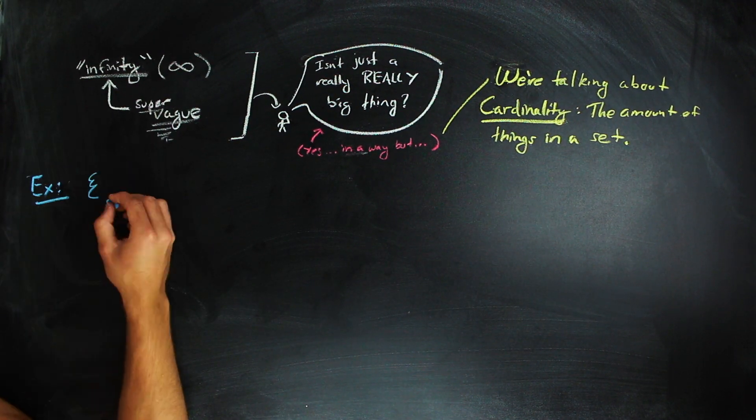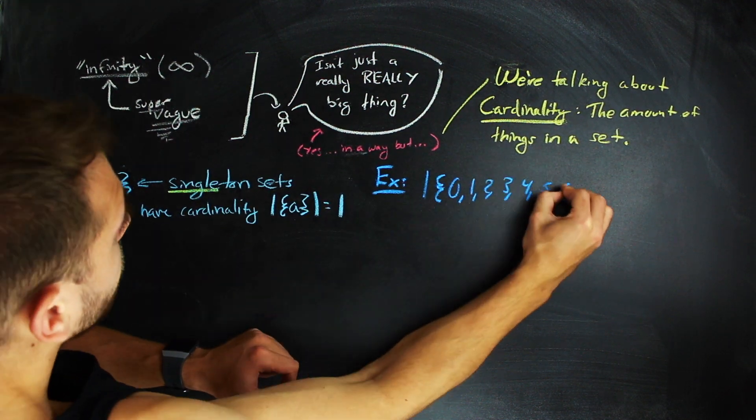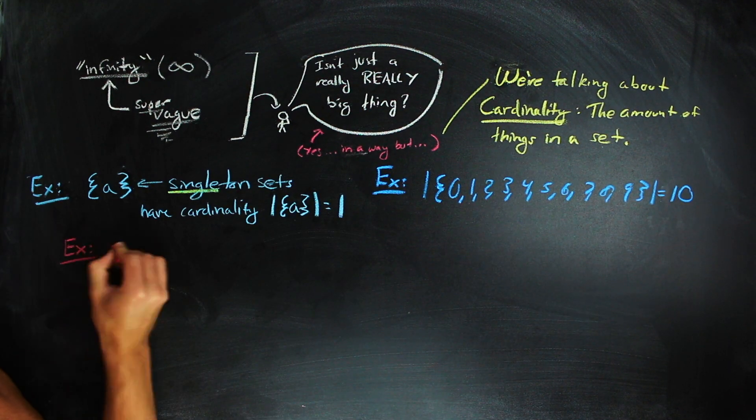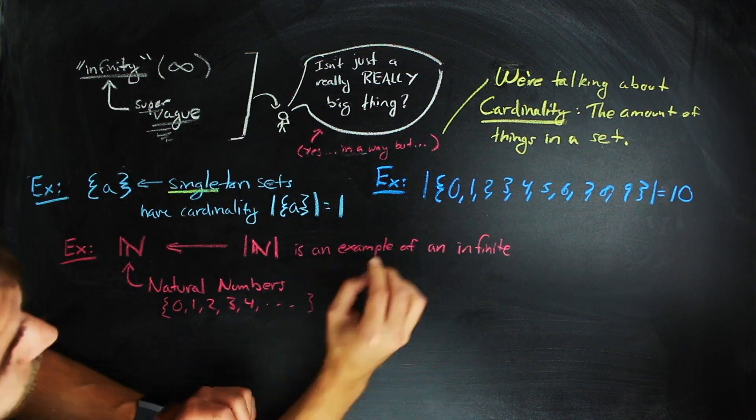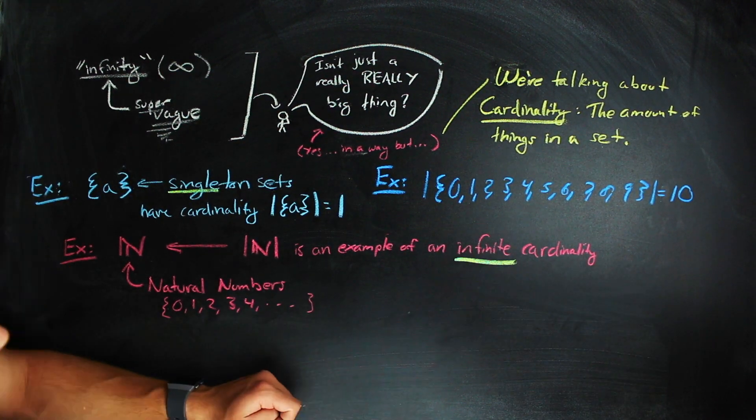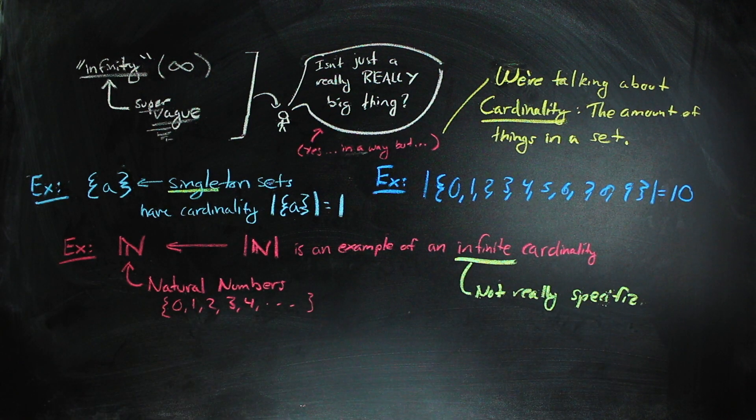So for example, this singleton set has a cardinality of 1, and this set has a cardinality of 10. And a set like the natural numbers is one example of a set of infinite cardinality. Infinite is not very specific here, and the goal of this video is to prove to you that this is the case.